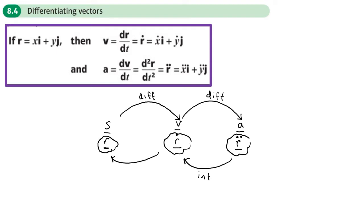When you integrate it introduces a constant, but this time the constant is made up of an i part and a j part. So when I integrate acceleration to get the velocity vector, I'm going to have not just plus C, but C·i and another constant, say D·j. So the constant of integration is made up of two parts: the i part and the j part.